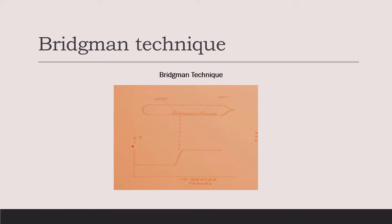This is our temperature versus X graph, where the X axis represents the heater travel axis and the vertical axis is temperature. The temperature profile has to be something like this. Here we see the seed end on one side and the charge on the rest. The seed end is kept at a lower temperature while the charge — the melt — is at a higher temperature and therefore in the molten condition. This lower temperature zone and higher temperature zone must be clearly distinguished.